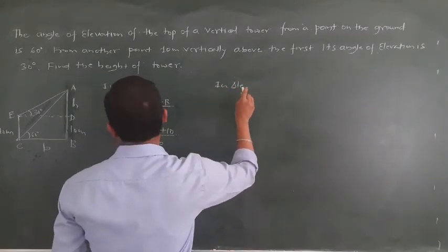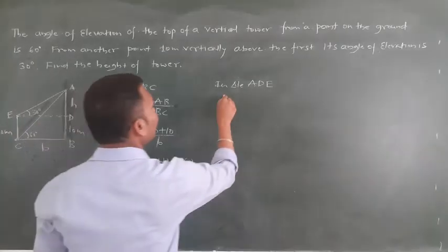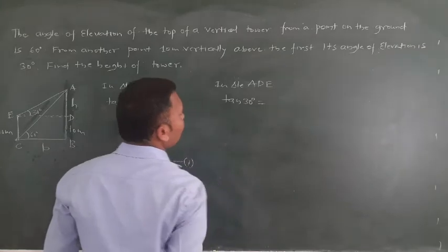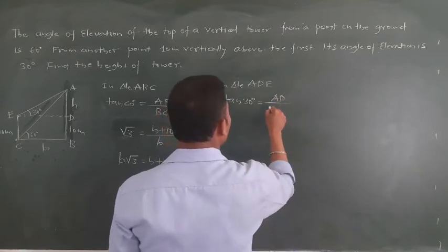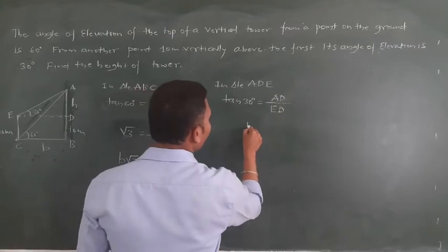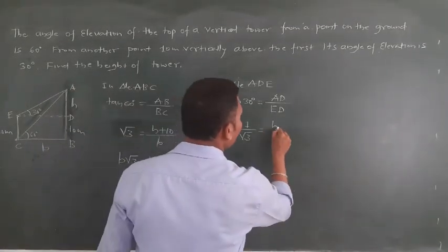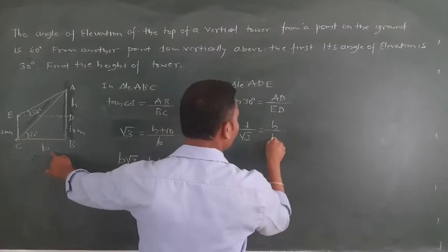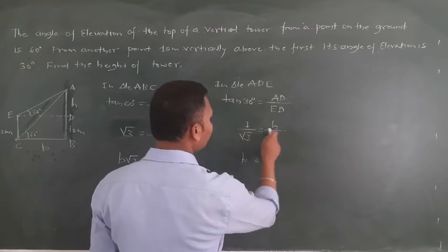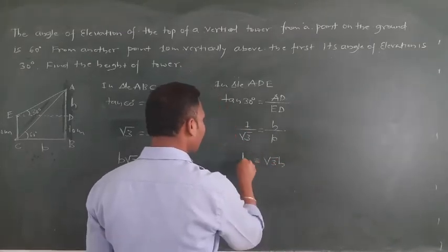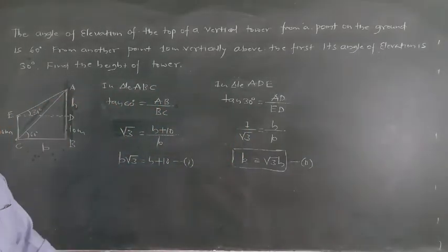Next, taking triangle ADE, we apply the trigonometric ratio again: tan of 30 degrees equals AD over ED. Tan of 30 degrees is 1 over root 3. So 1 over root 3 equals h over ED, where ED equals BC = b. Cross multiplying: b equals root 3 times h. We call this Equation 2.